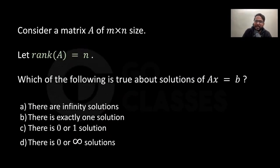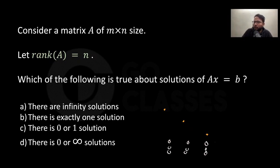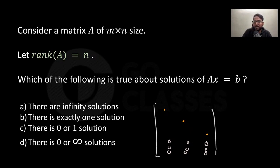Consider matrix A of size m×n. If the rank of A is n, then every column has a pivot. Let's say these three columns have pivots. However, every row need not have a pivot — you can have zero rows below the last pivot.